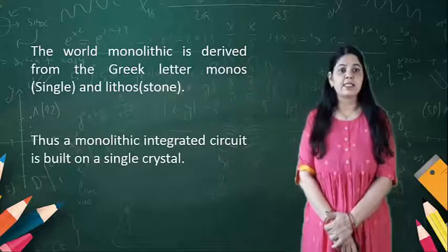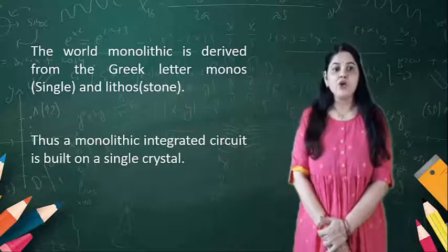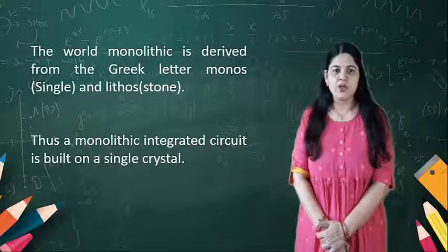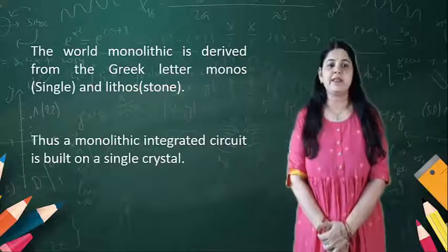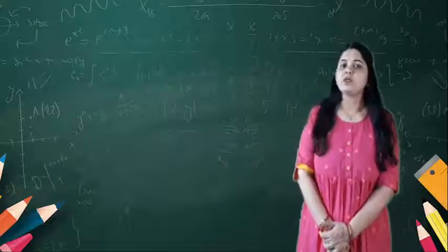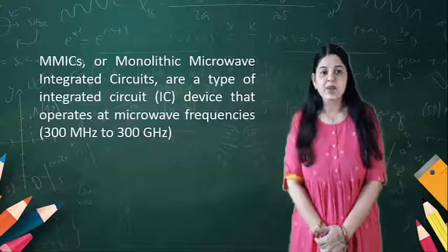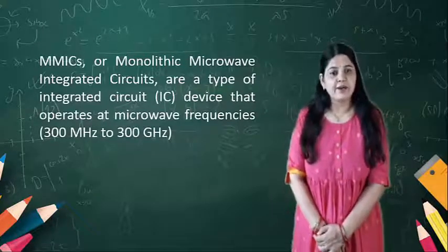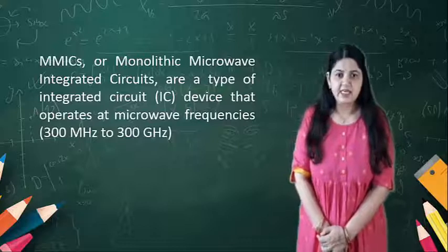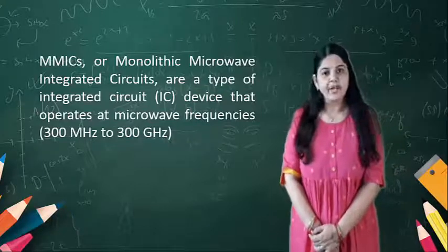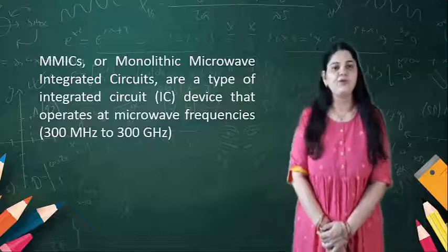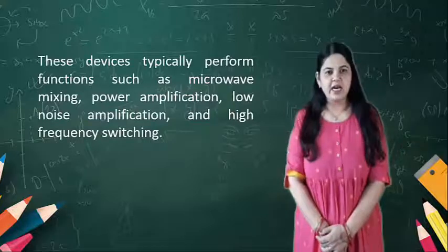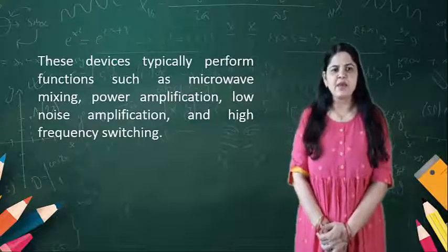The word monolithic is from the Greek language — mono means single and lithos means stone. So a monolithic integrated circuit is built on a single crystal. MMICs, or Monolithic Microwave Integrated Circuits, are a type of integrated circuit (IC) that operate at microwave frequencies, from 300 MHz to 300 GHz.